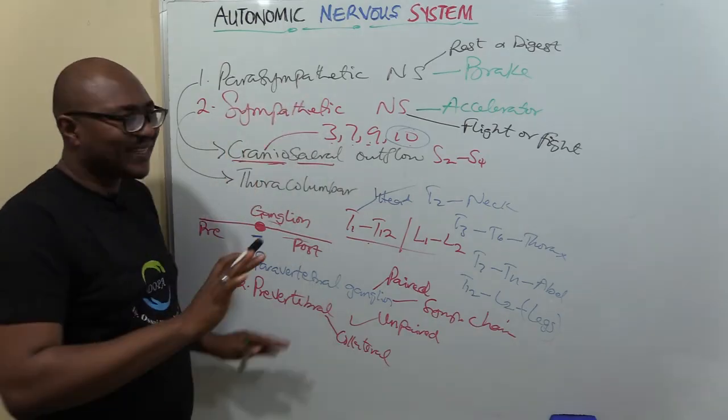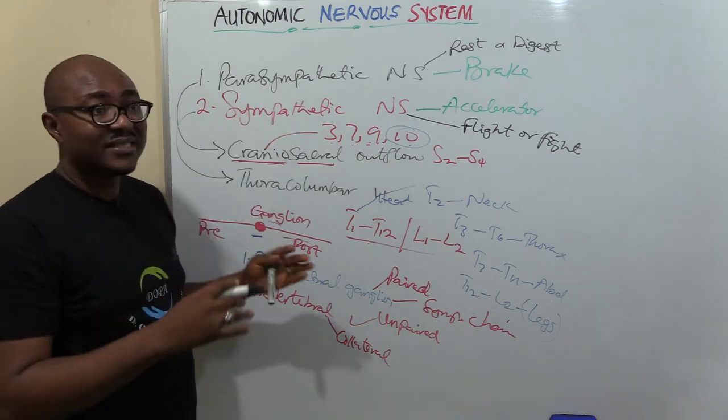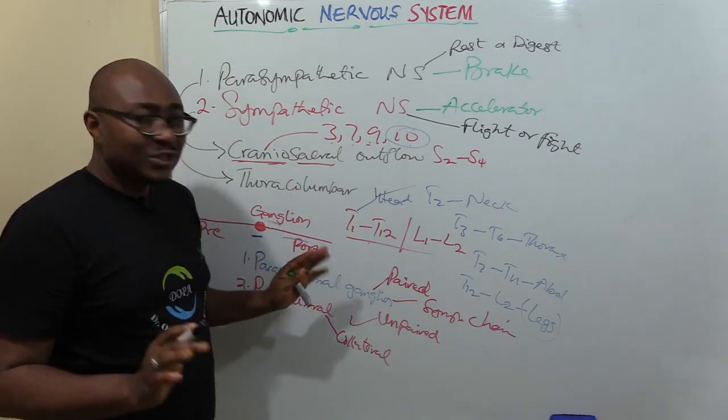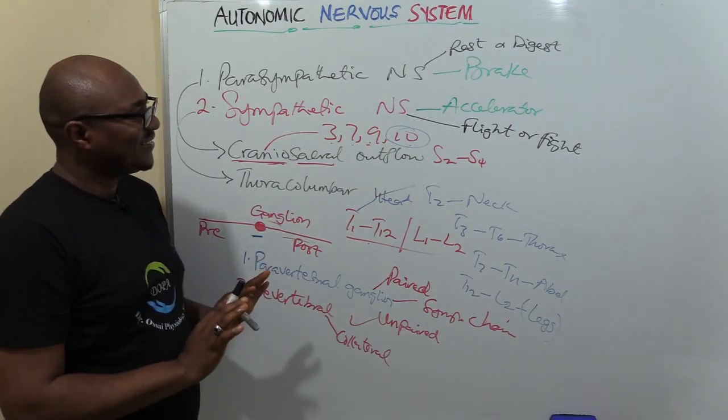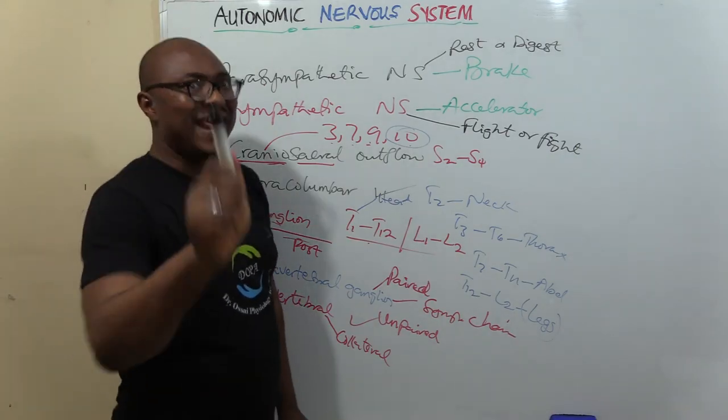These are the effects of the two divisions of the autonomic system on various body organs. You need to know them. So that's all you need to know about the Autonomic Nervous System. I'm going to see you in the next video.